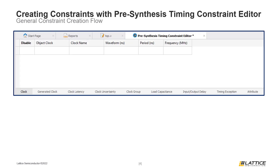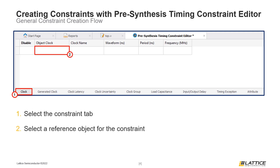To begin creating a timing constraint, users will first have to select the tab corresponding to the type of constraint they want to create. Once the correct constraint tab has been selected, the next step is to select a reference object for the constraint in the constraint editor area. In the example on the slide, we are creating a clock timing constraint and configuring the object's reference clock. One important thing to note is that the options available depend on the type of constraint being created.